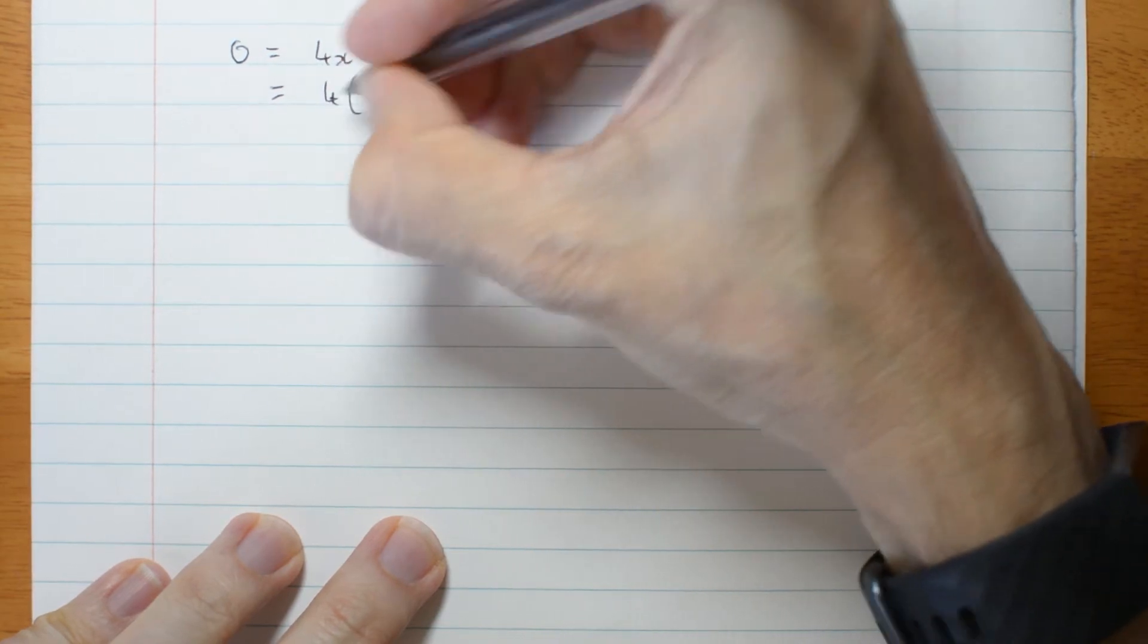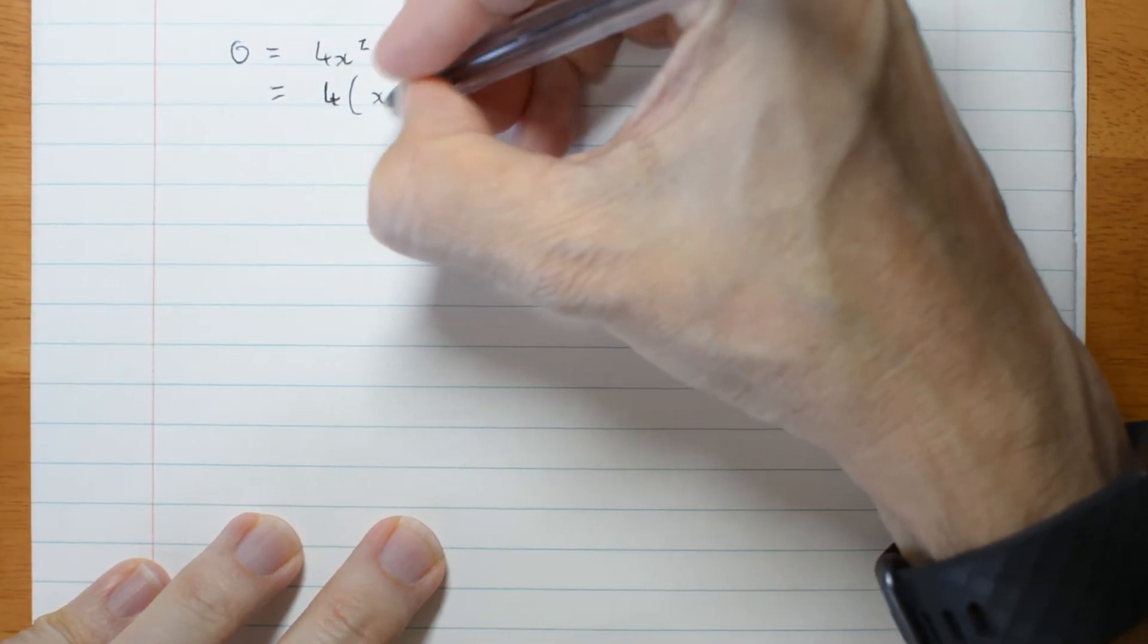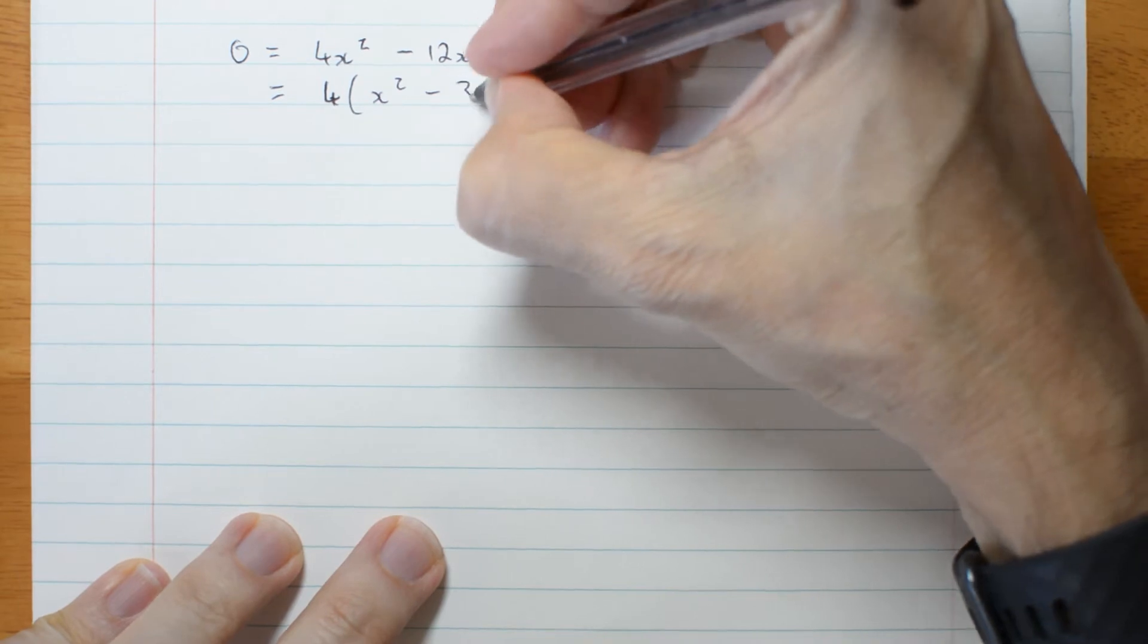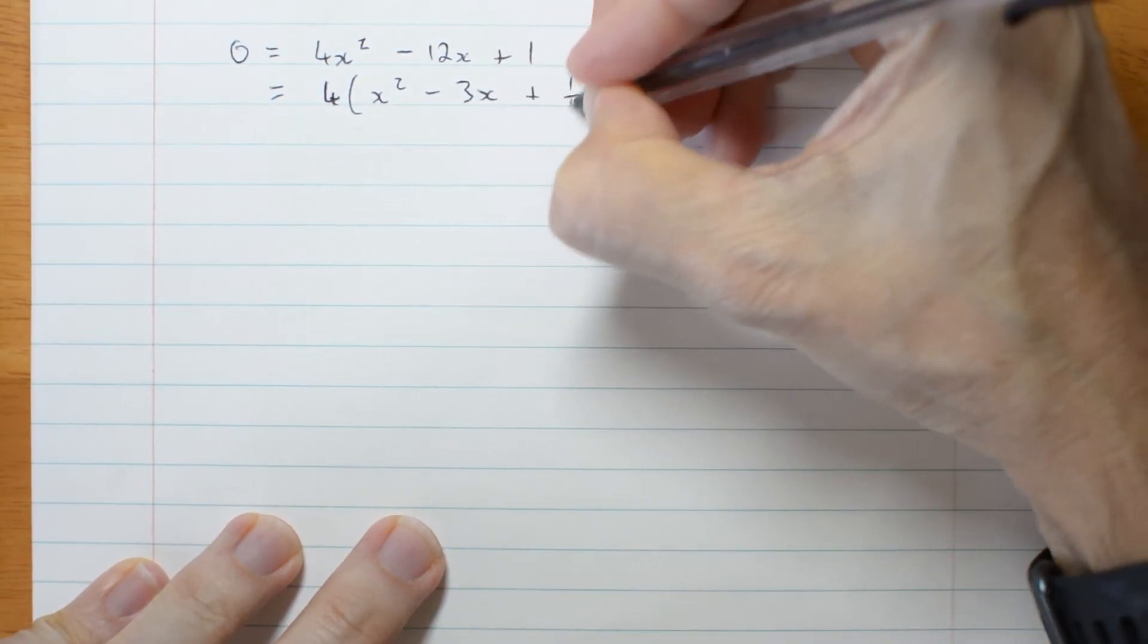Put the 4 outside. x² divided by 4, 3x divided by 4, a quarter.